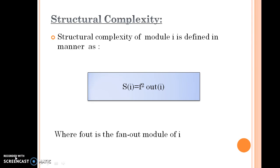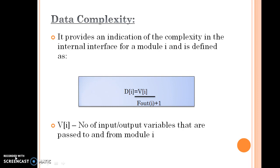Data complexity provides an indication of the complexity in the internal interface for a module I, and it is defined as D(i) equals V(i) divided by F-out(i) plus one, where V(i) is the number of input or output variables that are passed to and from module I.